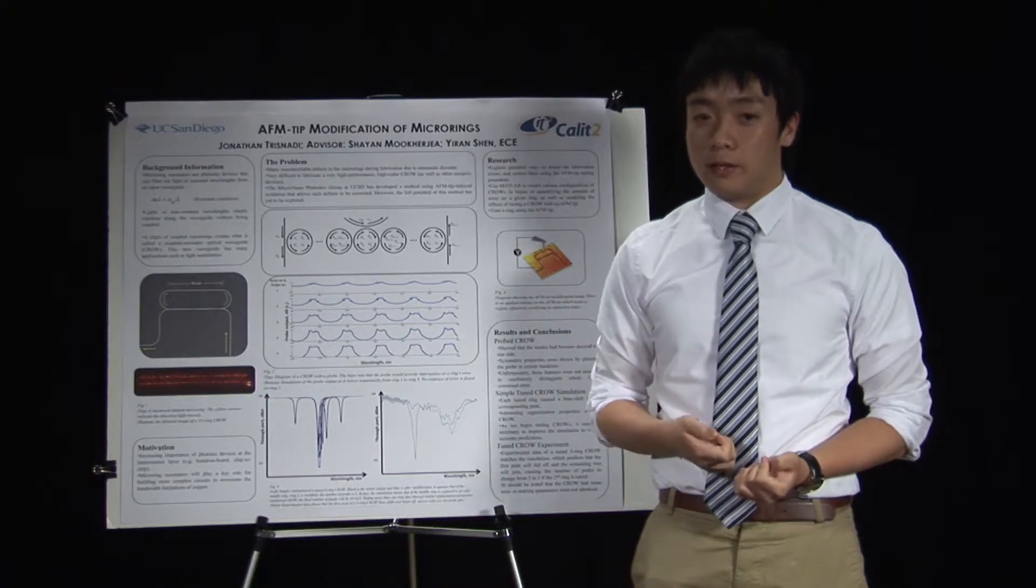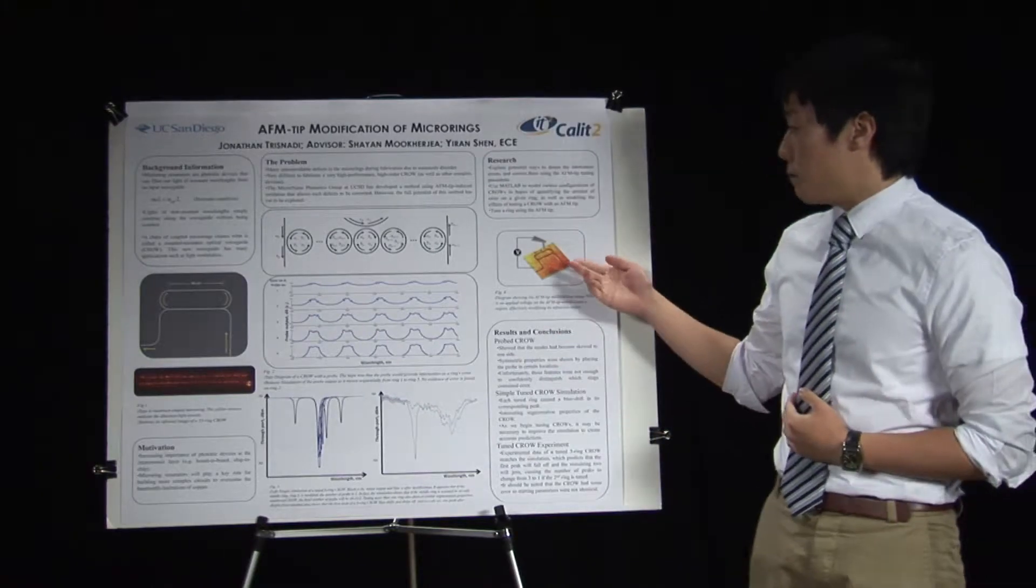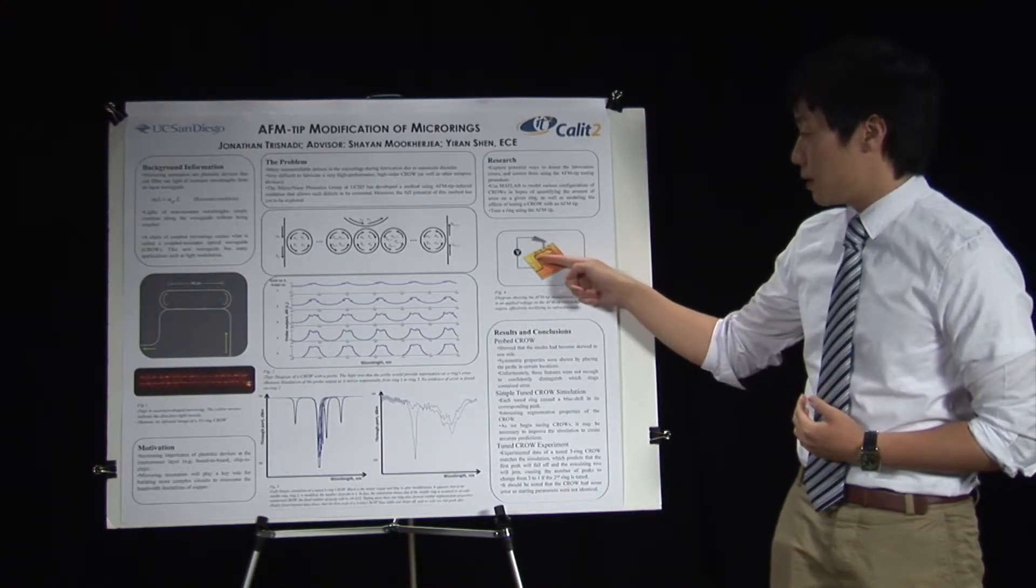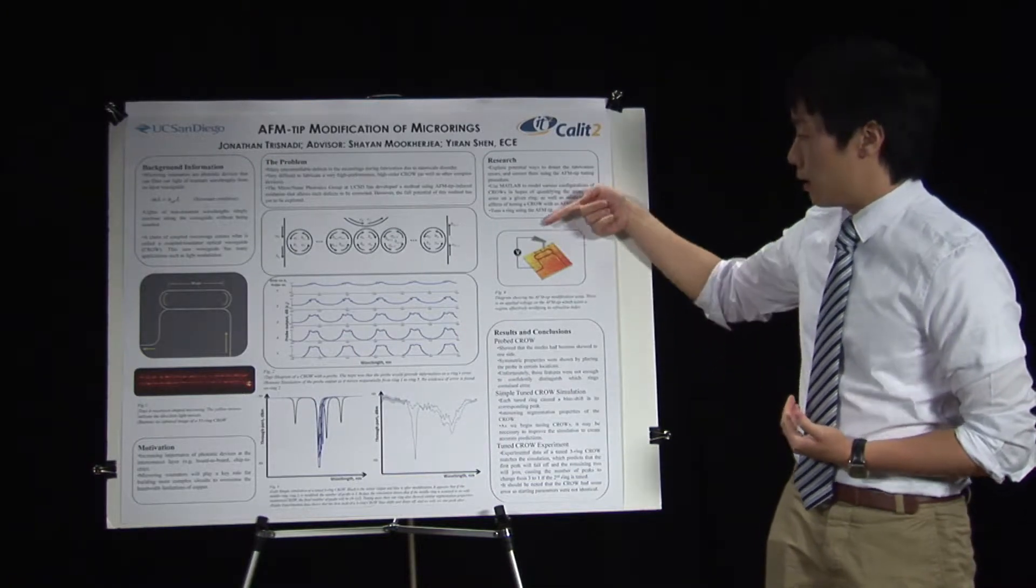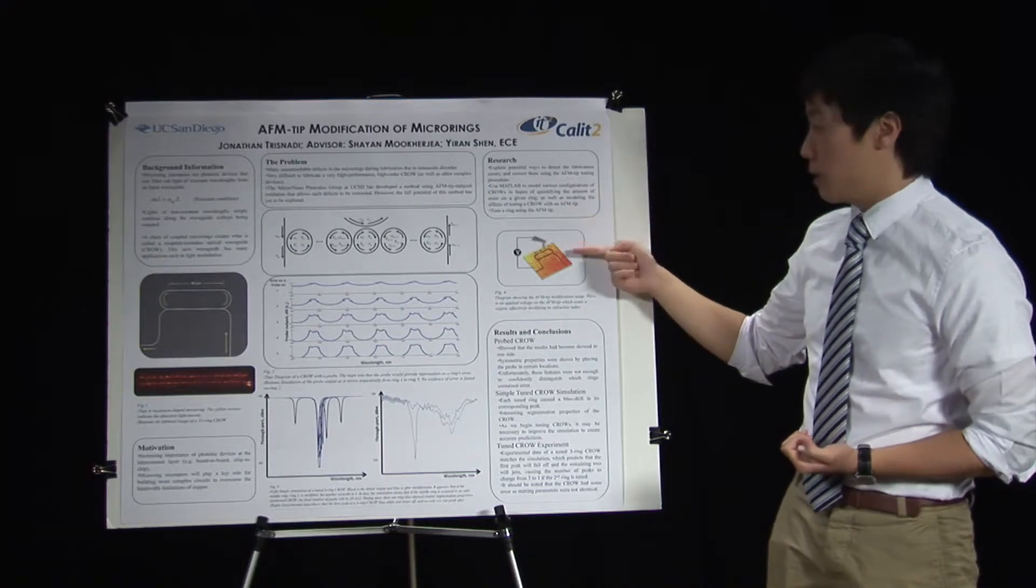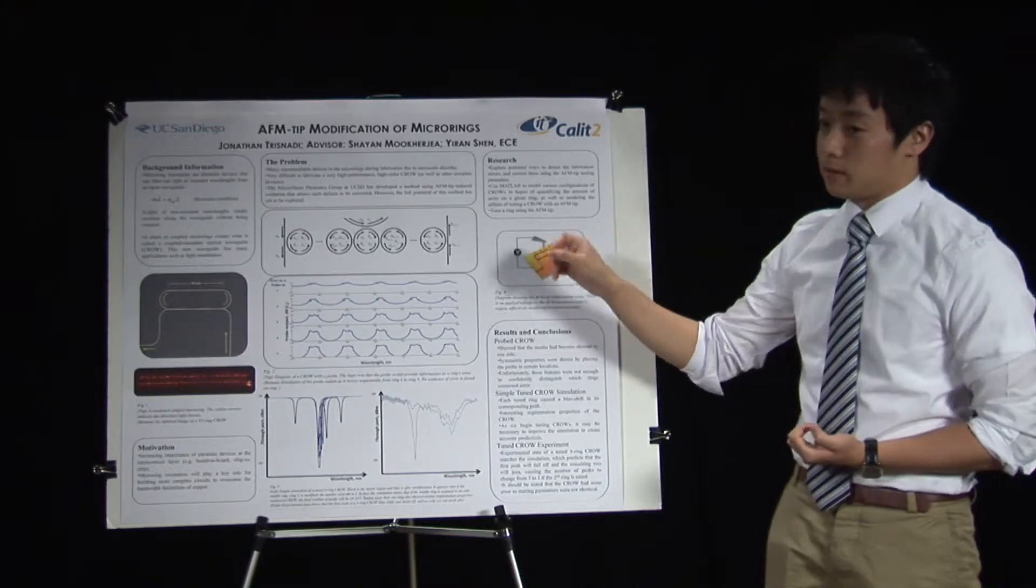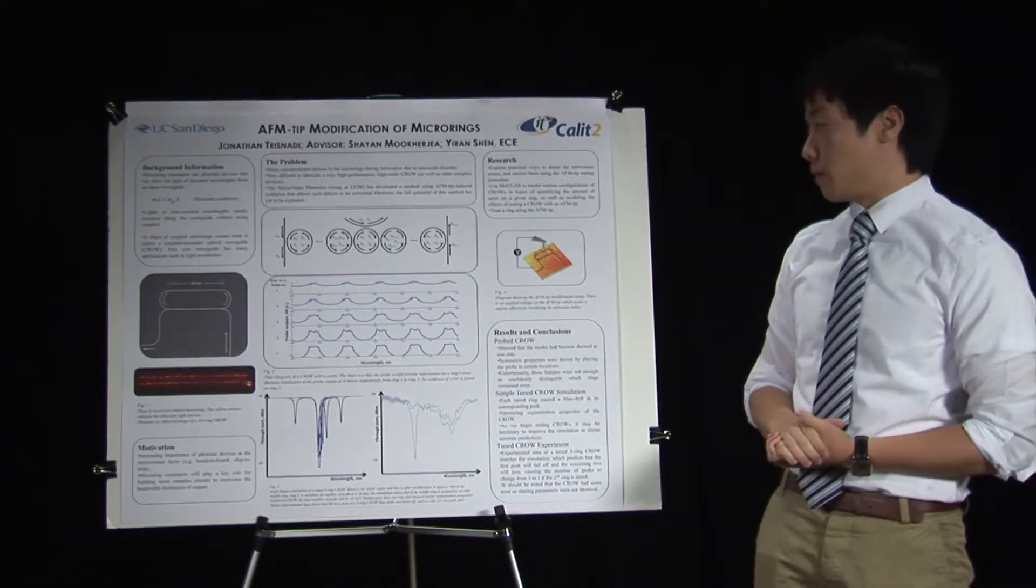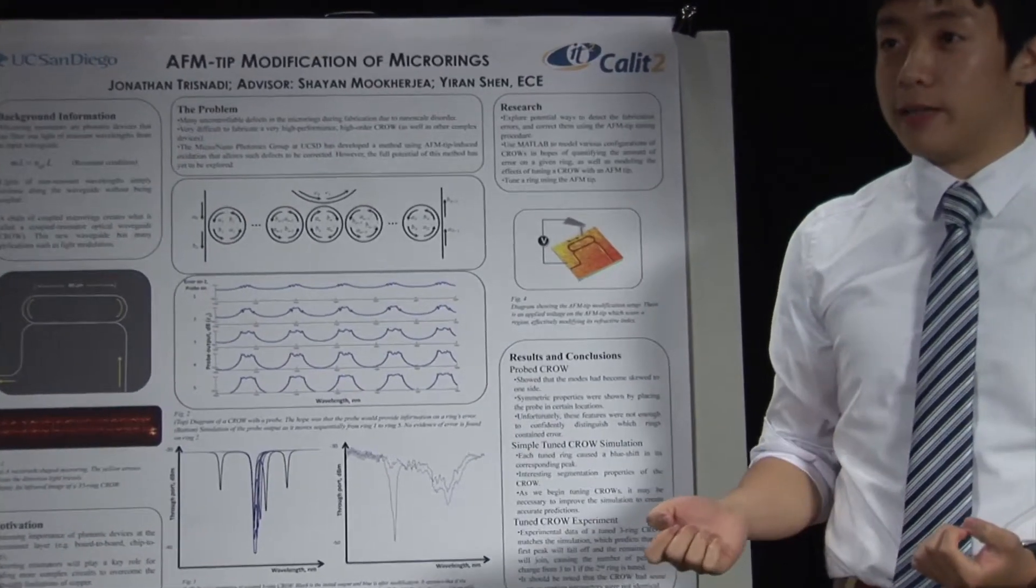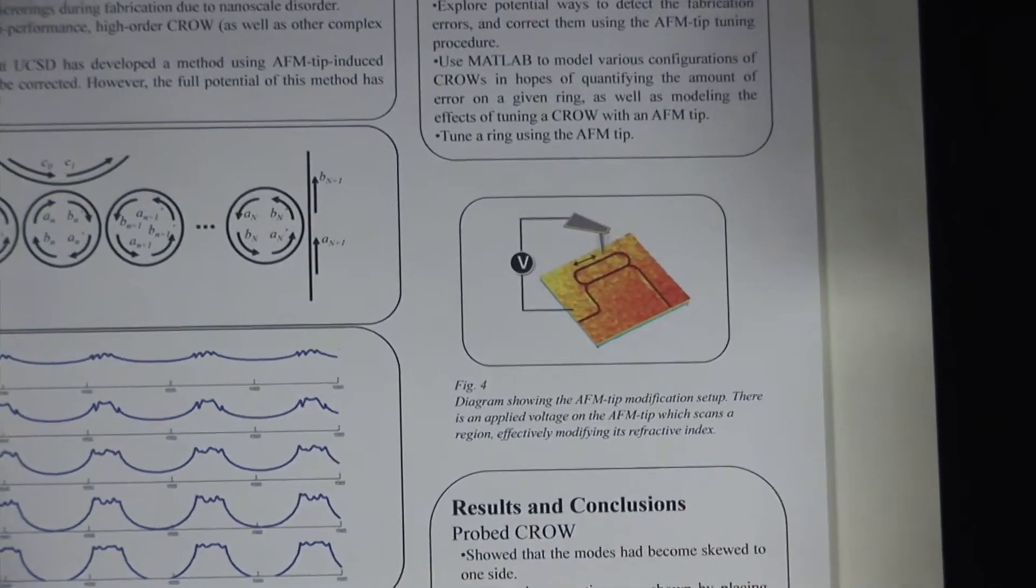And also, by tuning it, we could see how it would change over more tuning. This is a diagram of the tuning setup. This is a chip with a device on it. Here you see a single ring. This gray machine is the AFM tip, and there's a voltage applied to it, and we scan it across the ring. It just literally moves left and right along the ring. And this oxidizes the ring, which effectively changes its refractive index. And this changes the resonance wavelengths. So this is the process of tuning the CROW.